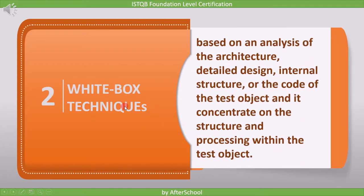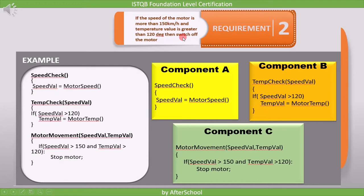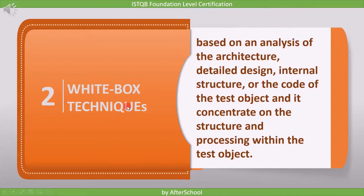White box testing is the opposite of black box testing. It is based on an analysis of the architecture, detail design, internal structure, or the code of the test object, and it concentrates on the structure and processing within the test object. Using the same motor example, for white box testing we divide the code into small units and verify that the code is implemented correctly by performing white box test techniques on them. This technique is named white box because we can see the code.